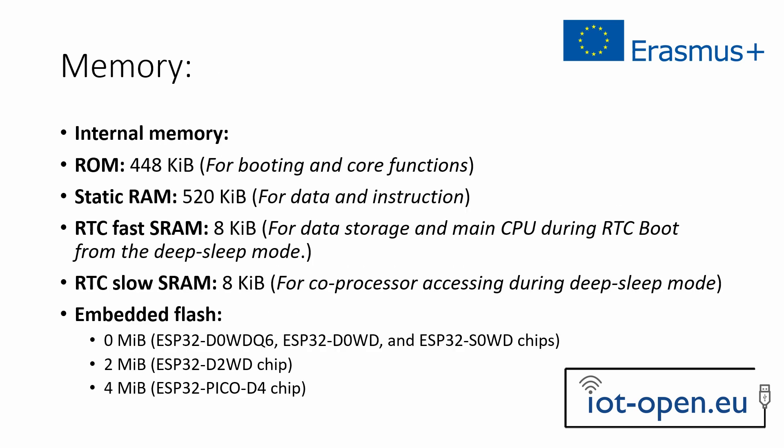The ESP32 on-chip memory consists of 448KB ROM for booting and core functions, 520KB static RAM for data and instructions, 8KB of RTC fast static RAM for data storage during RTC boot from deep-sleep mode, 8KB of RTC slow static RAM for coprocessor access during deep-sleep mode, and embedded flash between 0 and 4MB depending on the chip version and series.